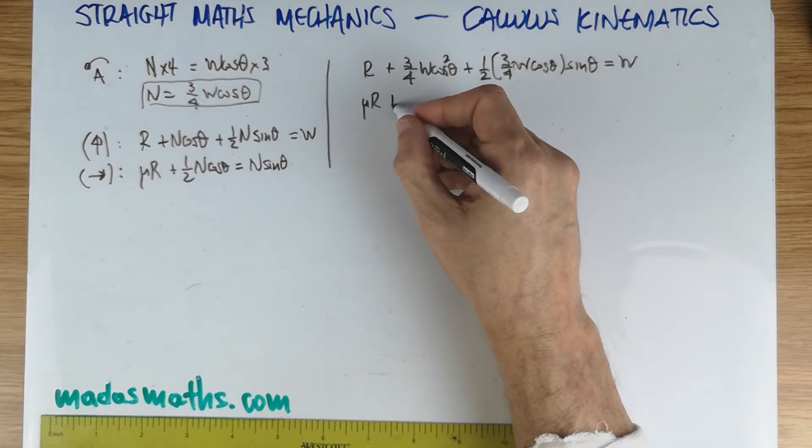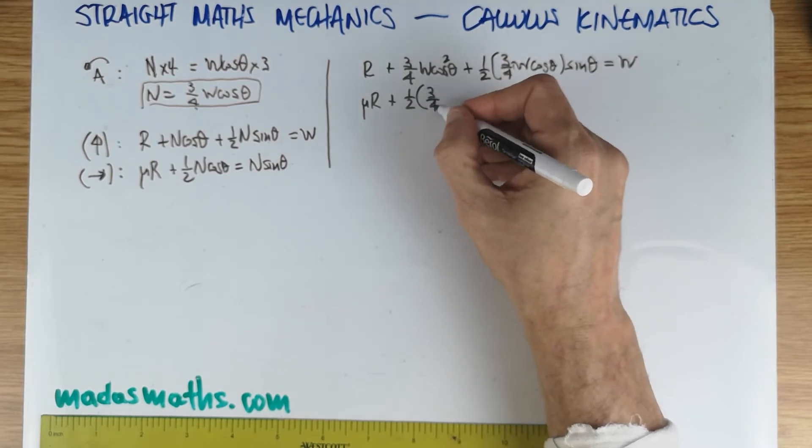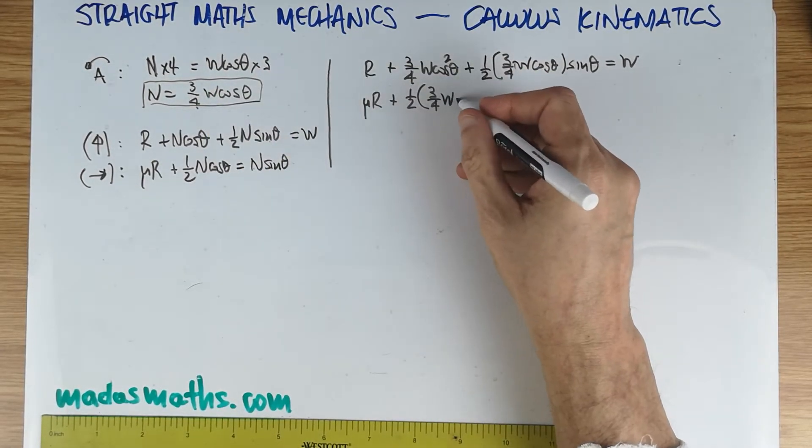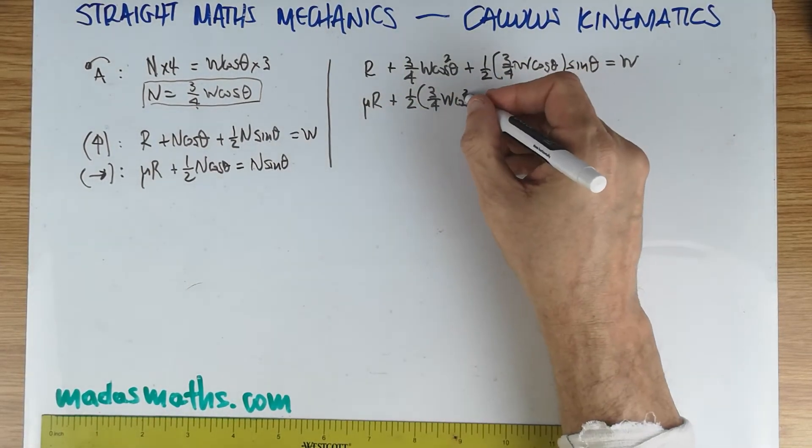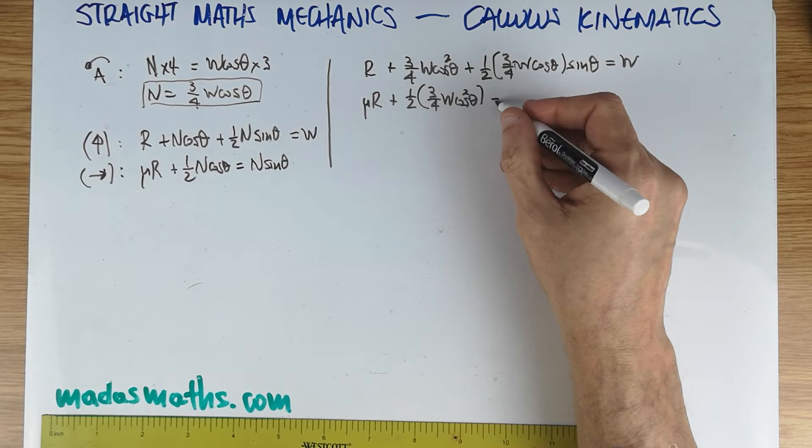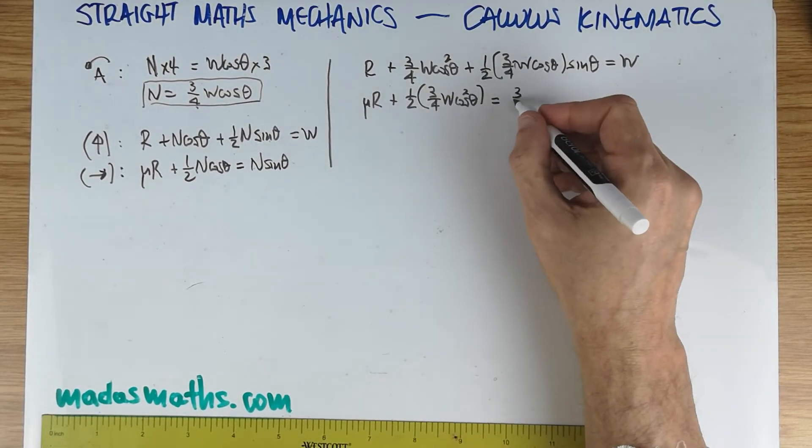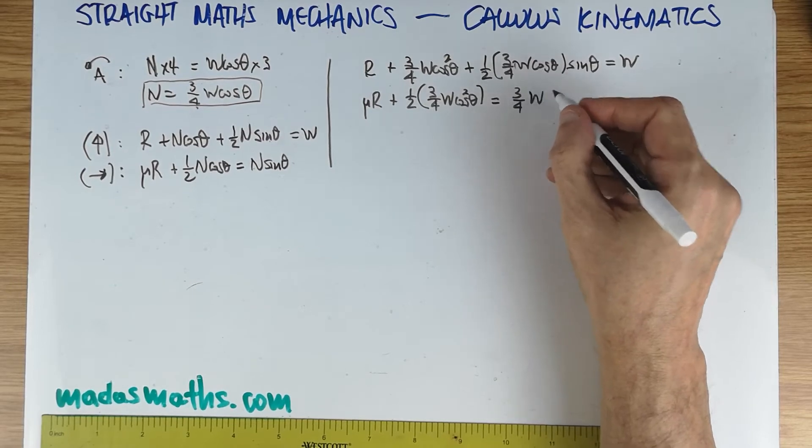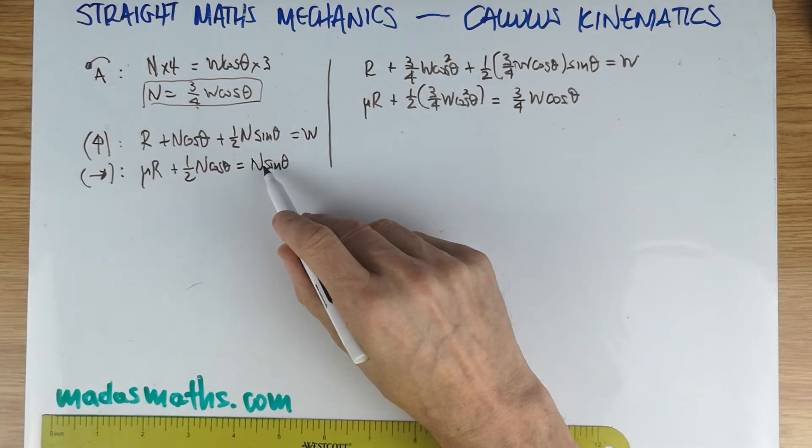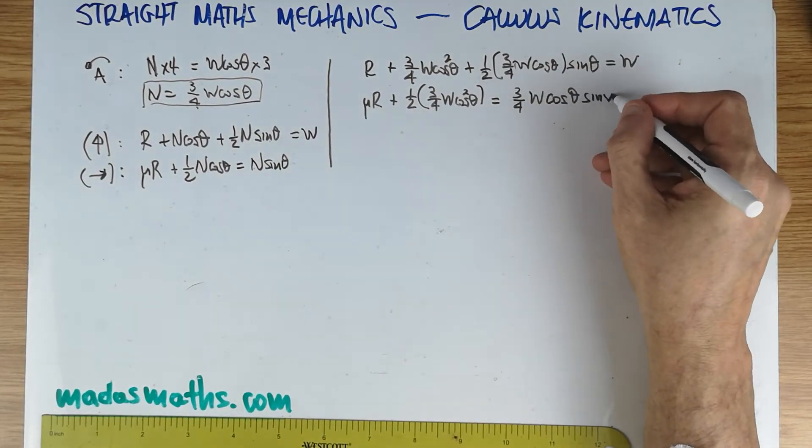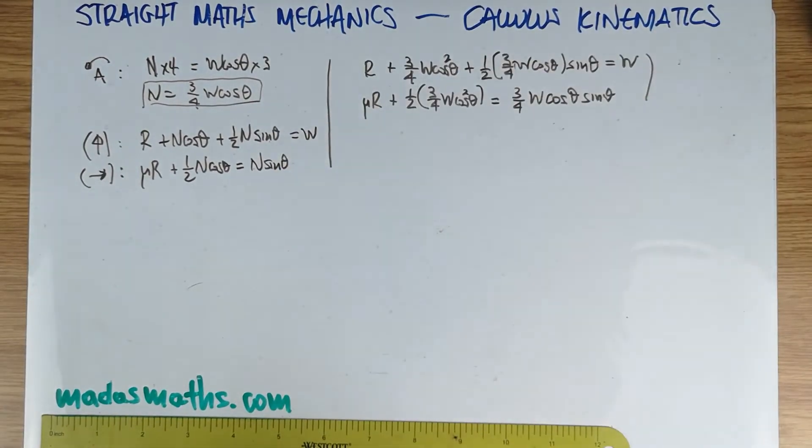I'm going to do the same thing with the other one. μR plus a half N, substitute in this box again, three-quarters W cos θ, times another cos θ, which was already there, getting a little bit lazy, is equal to N, which is three-quarters W cos θ, times the sin θ.